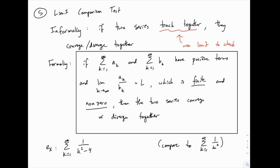The way we actually check that is we divide one by the other and see if that quotient — that fraction — is more or less consistent. If that fraction goes to zero, that means the bottom is growing much faster than the top. And if that fraction goes to infinity, that means the top is growing much faster than the bottom. But if that fraction doesn't go to zero or infinity, that means those two values are growing or shrinking at the same rate. That's informally what this test checks.